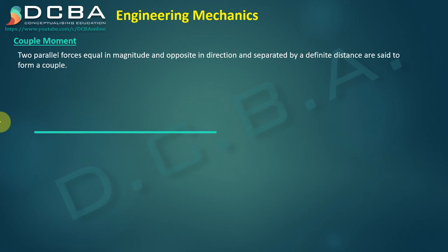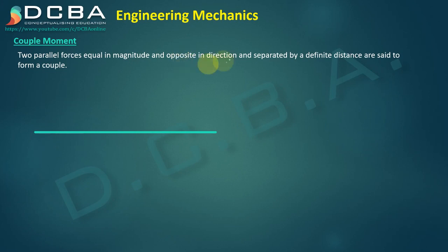In this lecture we will be starting with this new topic of couple moment. This is an extension of the previous topic in which we learned about moment — what is the moment of force — and we also learned the sign conventions. This is a special type of moment-forming force called the couple moment. The definition is: two parallel forces, equal in magnitude and opposite in direction, and separated by a definite distance, are said to form a couple. The words that are important here are: parallel forces — they need to be parallel to each other.